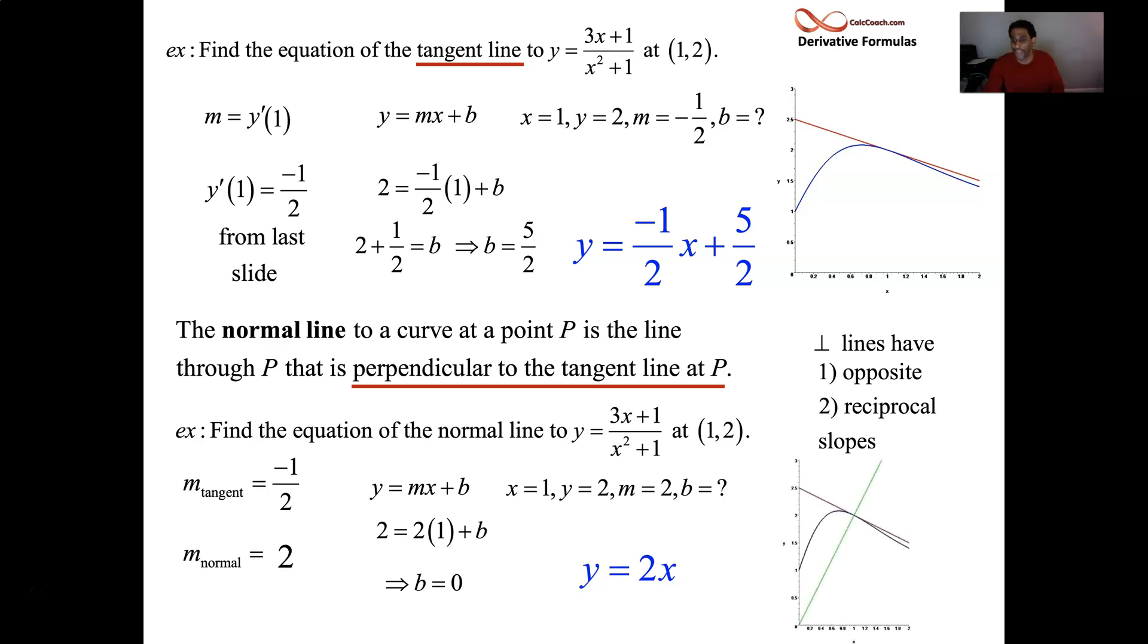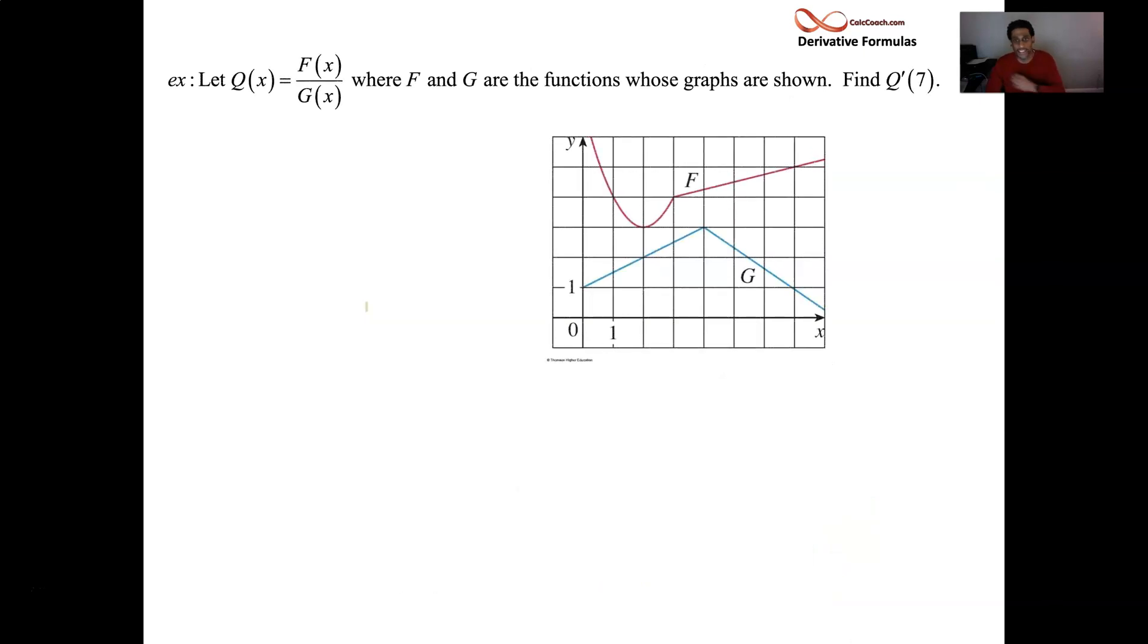Okay, opposite reciprocal slopes. So our normal line slope is 2. Same point, x is 1 and y is 2 and now m is 2. So it turns out that b is 0. Believe it or not, this line goes to the origin with a slope of 2. y equals 2x is this equation. And here's the graph of all three together. Great job. Good work. Not that bad, right? And so next example.